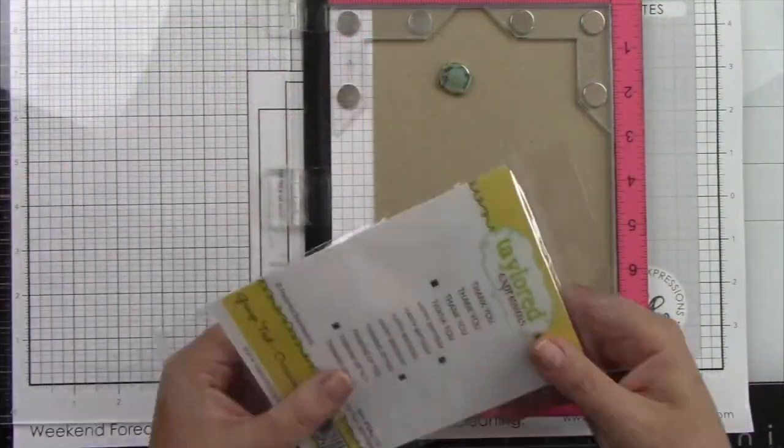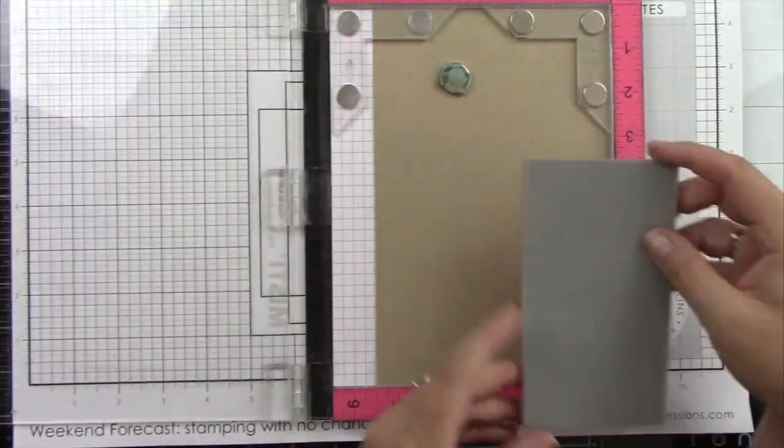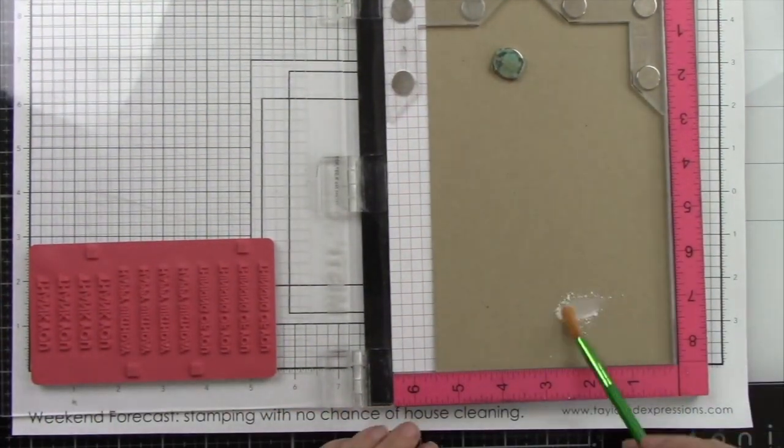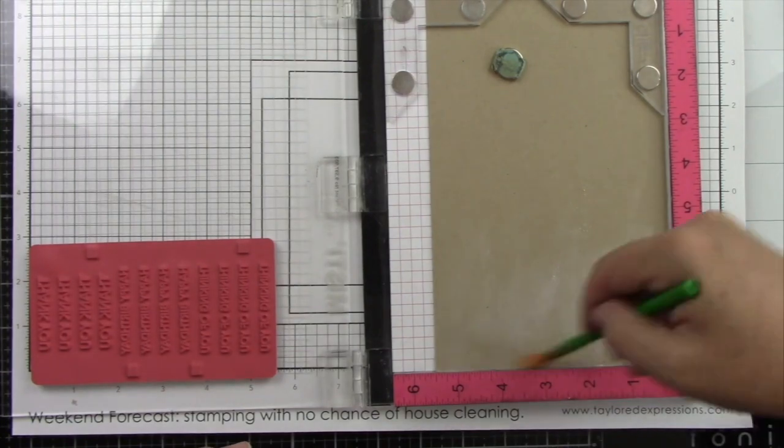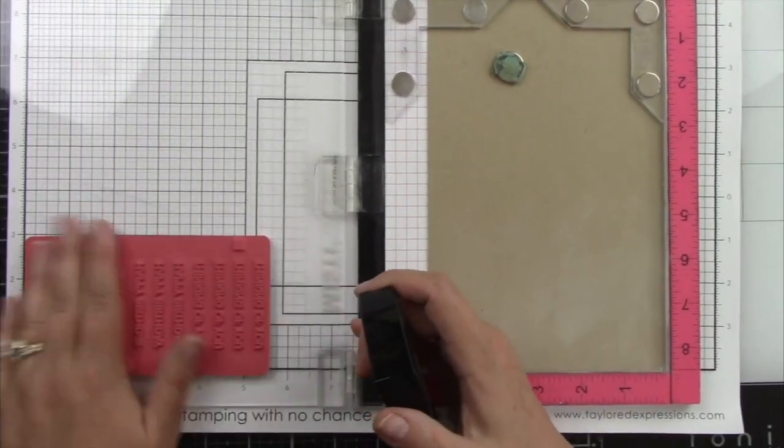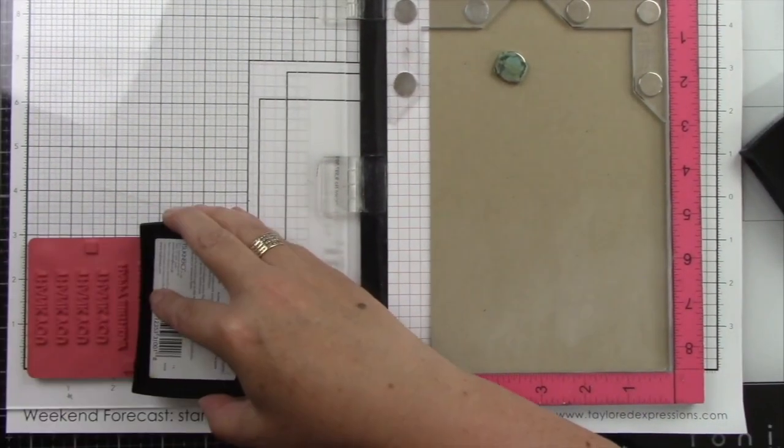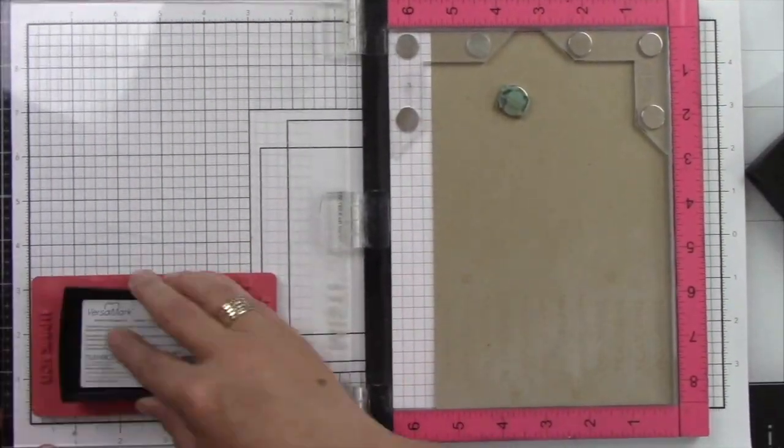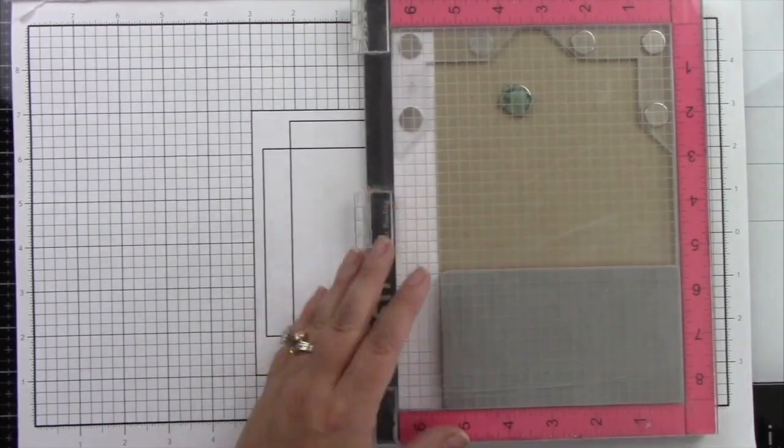So now I'm going to stamp the group text stamp onto some toffee cardstock. I'm going to be doing some white heat embossing. So I will prep my card panel with an anti-static powder tool. I'm going to use some Versamark ink and stamp this up. Excuse me, ink this up and then stamp it a couple times on my toffee cardstock.